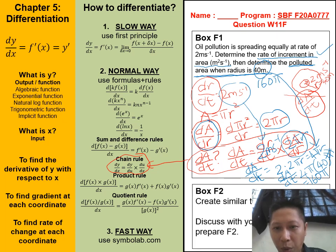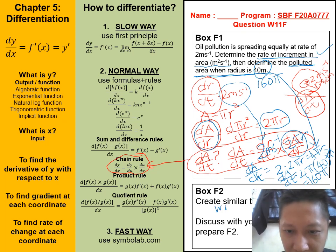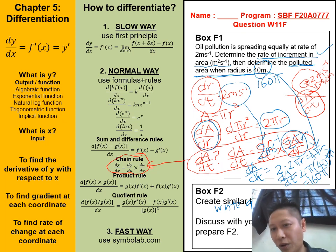Next, box F2, one of you. So you have two people in one group. Later on, you discuss with your group member. One of you going to create similar to F1 question. So later on, you're going to write the question here. And then give it to your friend. Your friend going to solve it. You also going to solve it. Let's go to the last question for the tutorial session.